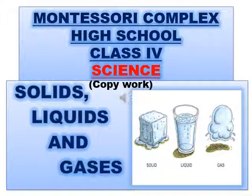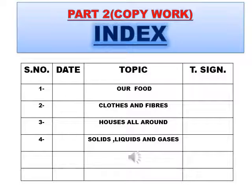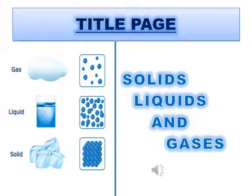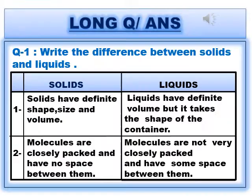Book work has been completed. Now you will prepare for the written work of chapter number 4. All work has to be done sequentially. First you will fill the index. After the index, you will be making the title page of the chapter we are doing. After the title page, you will be putting the center heading of long question answer to the very next page, then start question answer.